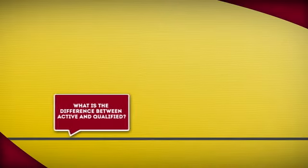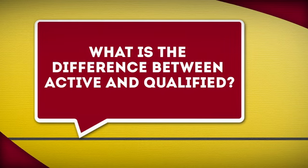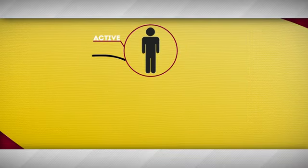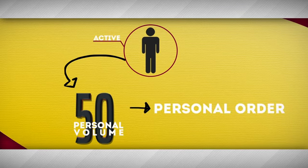What is the difference between active and qualified? To become active, you just need to generate a minimum of 50 in personal volume, either through a personal order or a retail order processed through OrganoGold.